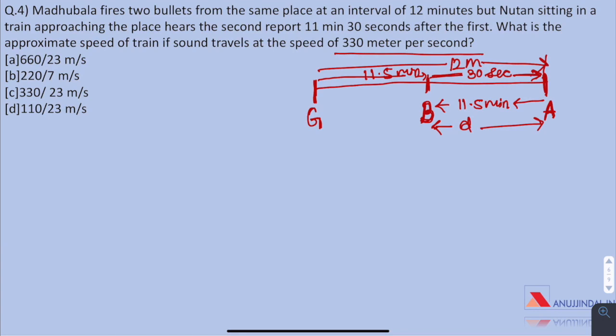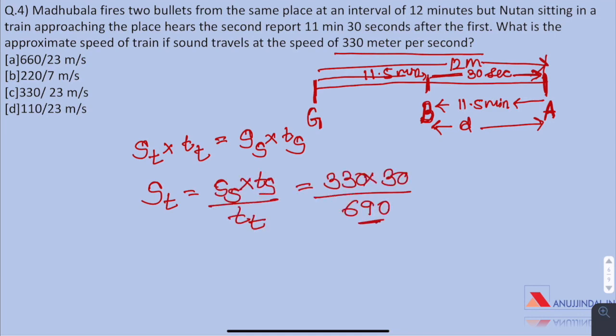We can compare these equations and as the distance of both the sound and the train is equal, we can compare speed of train into time of train equals to speed of sound into time taken by sound. So here we have to find the speed of train which will be equal to on putting the values, 690 is nothing but 11 minutes and 30 seconds. We get 330 by 23 meters per second.